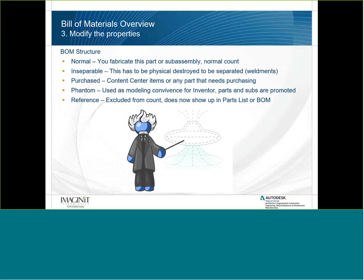One of the biggest things we adjust is the Bill of Materials structure, done typically on the Model Data tab. Normal means you fabricate this part or sub-assembly and it gets counted normally. Inseparable refers to things that have to be physically broken to be separated, like weldments — if you create a new assembly from a weldment template, it automatically is set to inseparable. Purchased is for everything out of Content Center; anything you pull from there gets a purchased Bill of Materials structure.